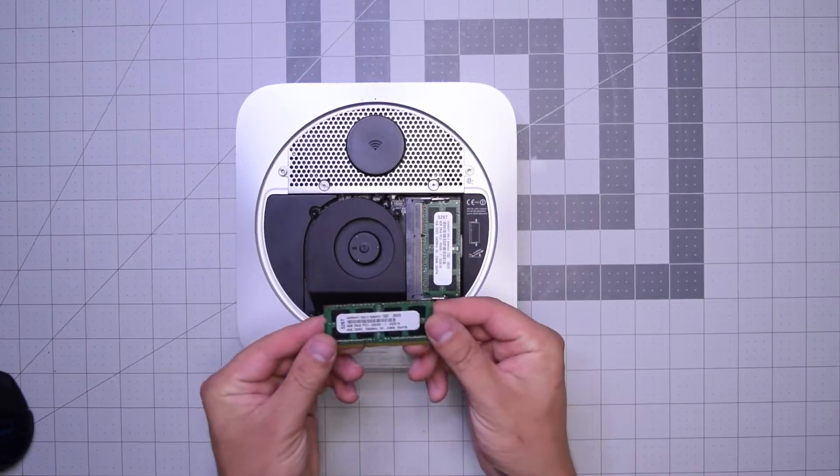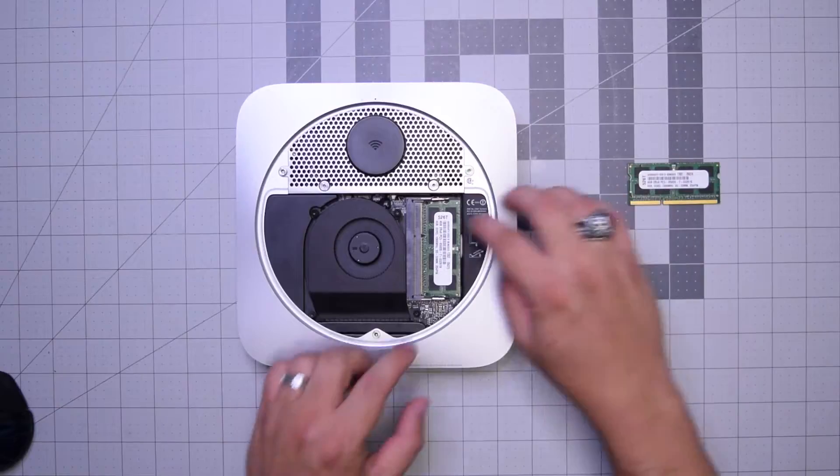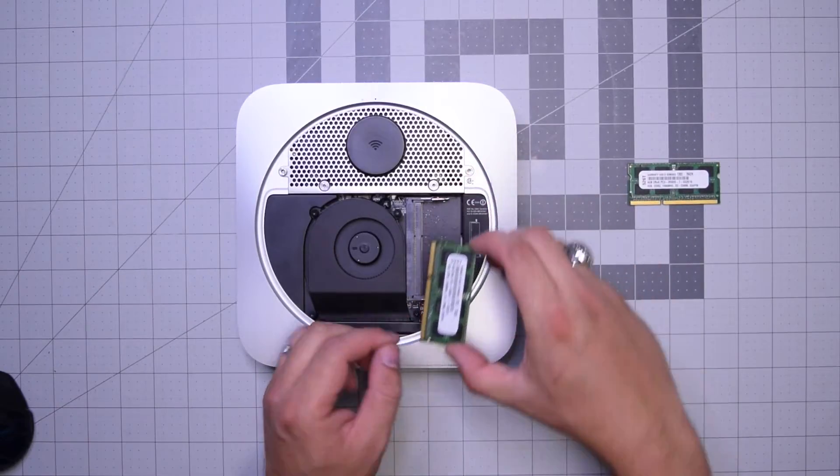Then tilt it upwards and pull it out of its socket. Do the same exact thing on the bottom chip and pull it out.